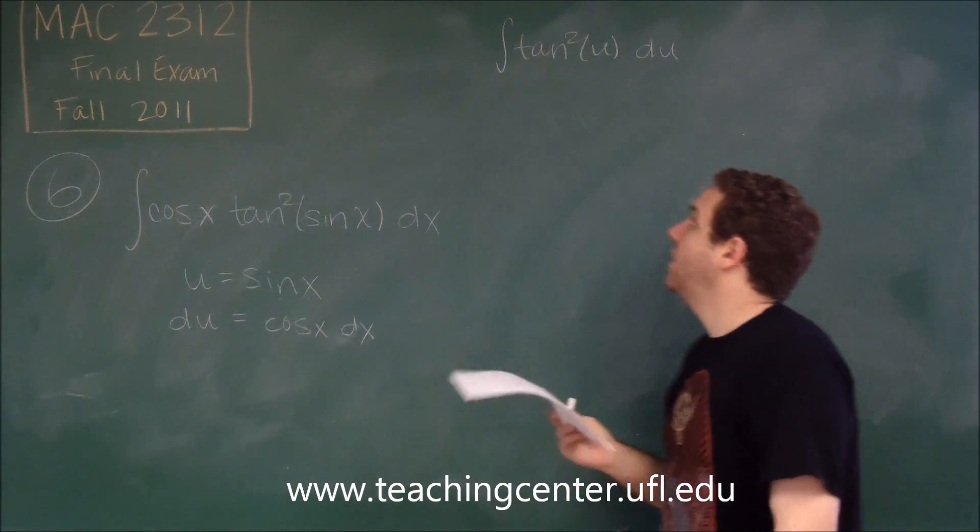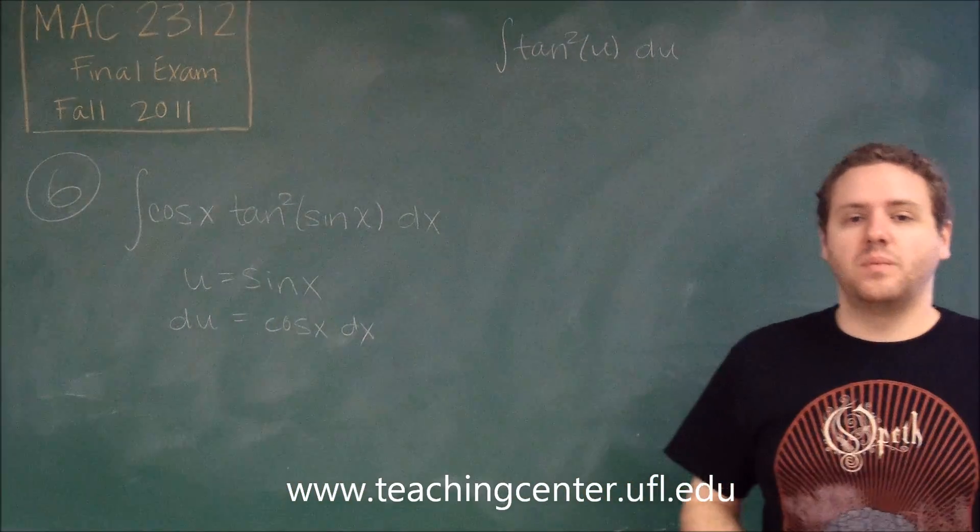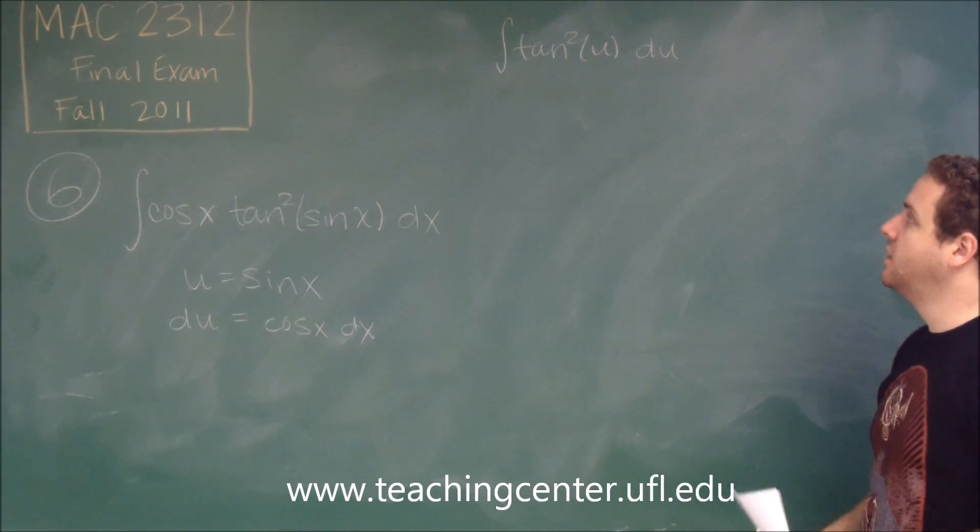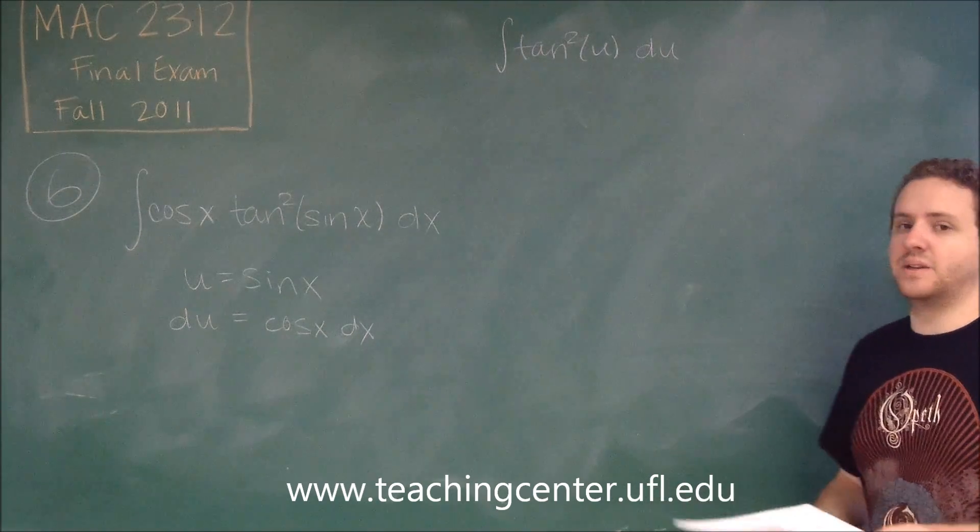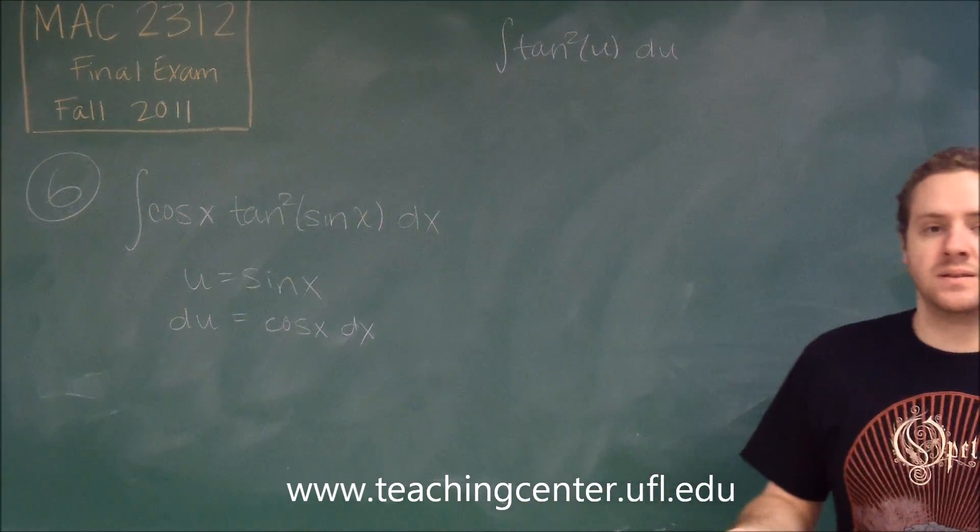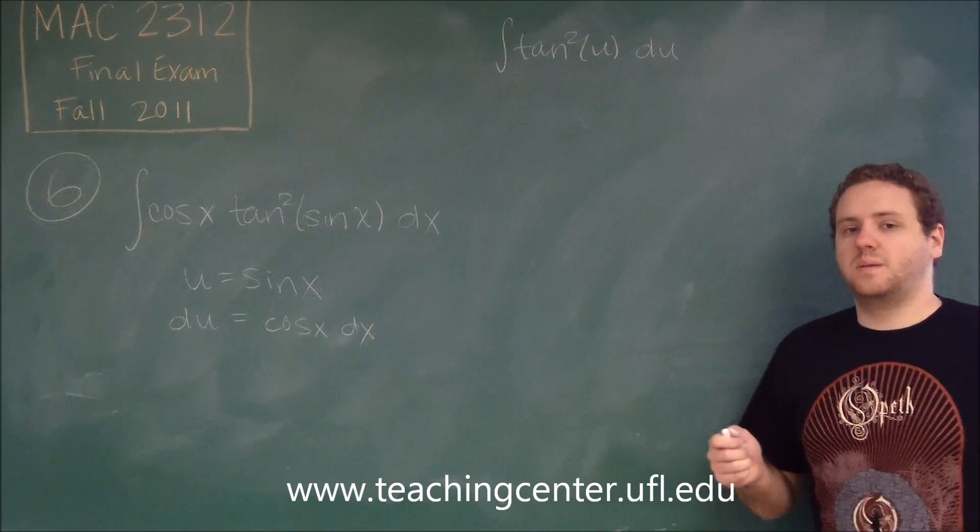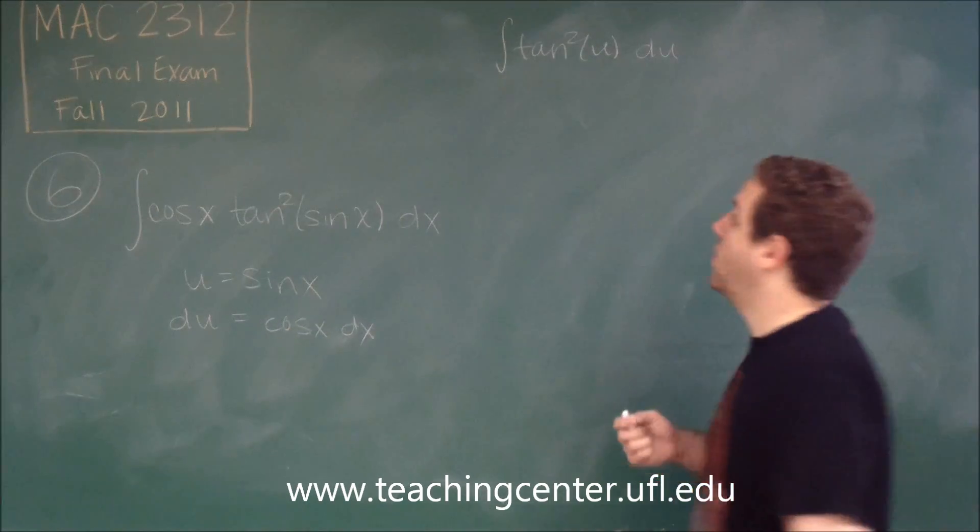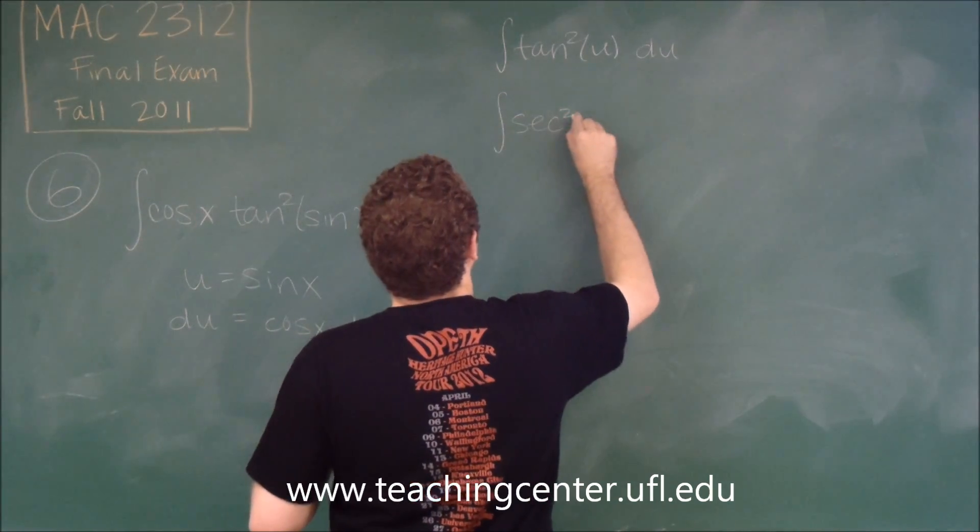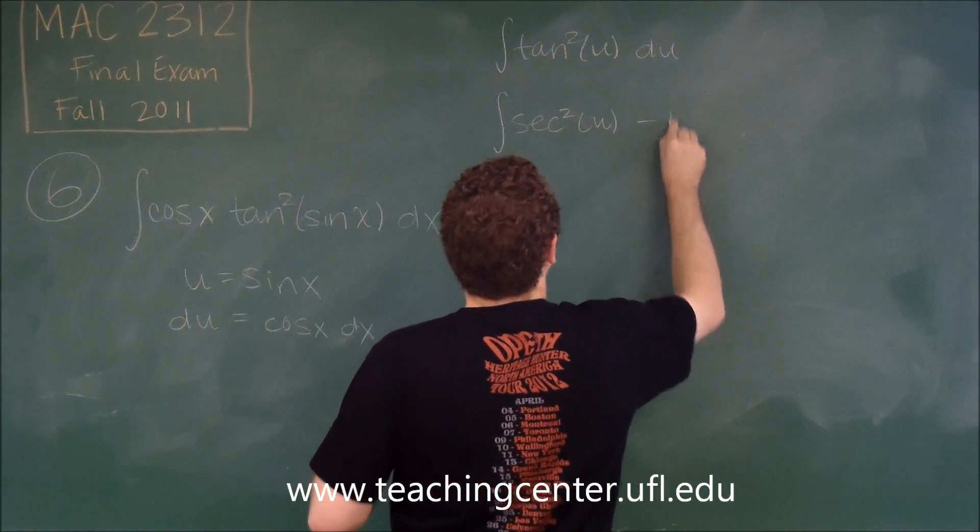Now we need to figure out how to integrate that. If you remember from your trig integral rules, tan squared is not something we can easily integrate. However, if we use our trig identities, we can get something that is. Tan squared is the same thing as secant squared minus 1, so let's turn this into secant squared u minus 1 du.